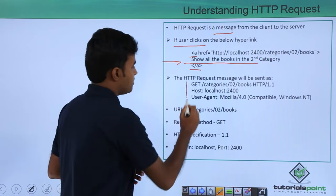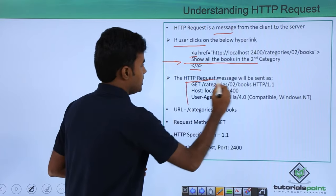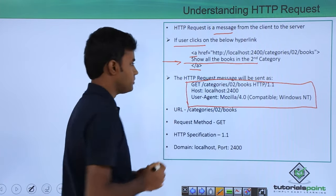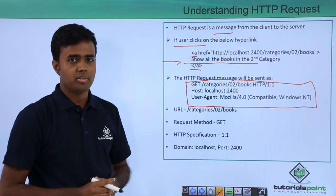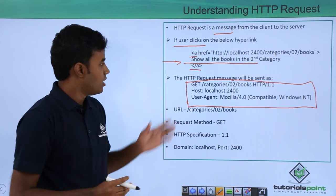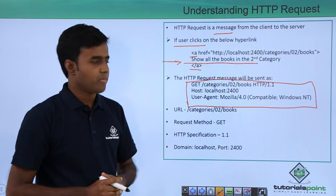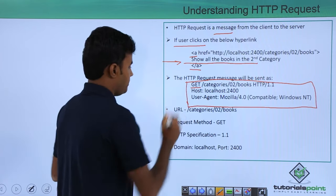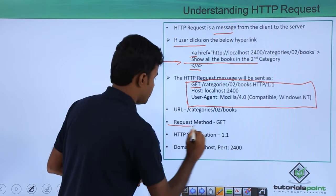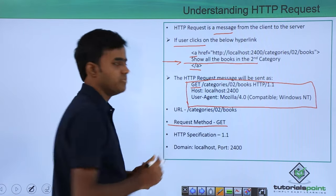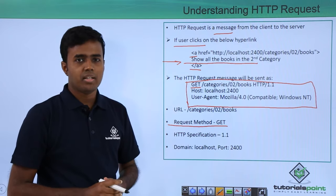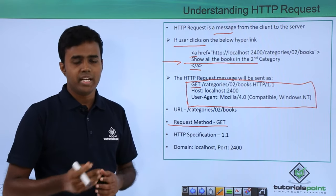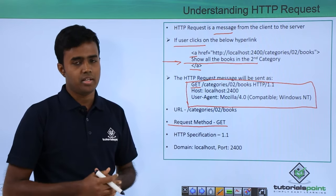The HTTP request message looks like this. Let us break down and understand what this message looks like. We have something called GET, which is nothing but the HTTP request method. We have several other request methods like POST, PUT, DELETE, PATCH, and so on.